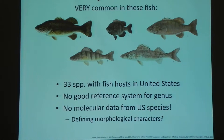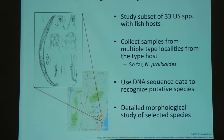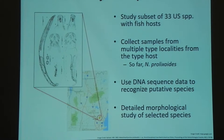This is a big issue for this group because it's so common. We really want to be able to track our parasite populations in our fish hosts. So that's what I'm doing for my project — trying to get a good molecular database going and a morphological database associated with that to be able to differentiate species. I'm going to study a subset of the 33 species in the United States, because they're spread all over in different hosts across the U.S., but I'll be collecting samples from multiple type localities.